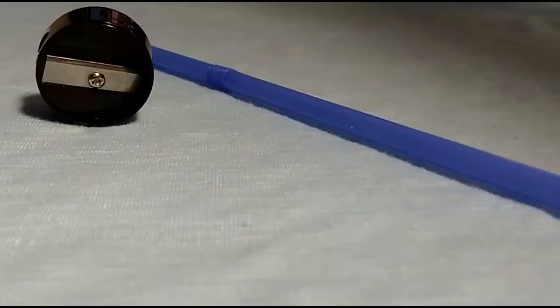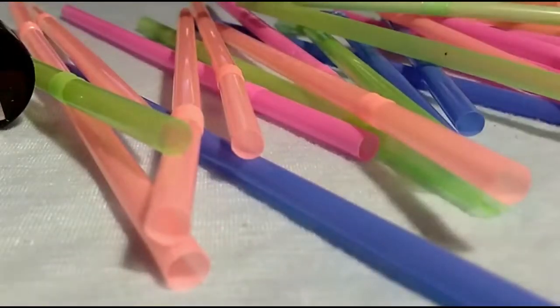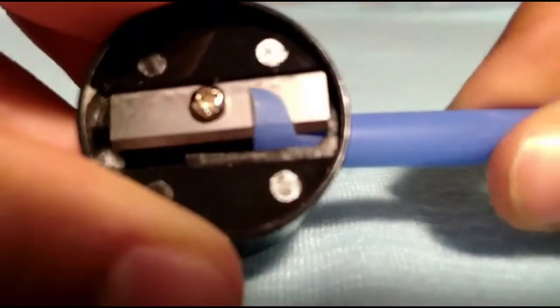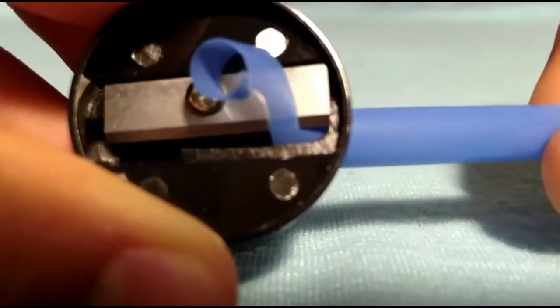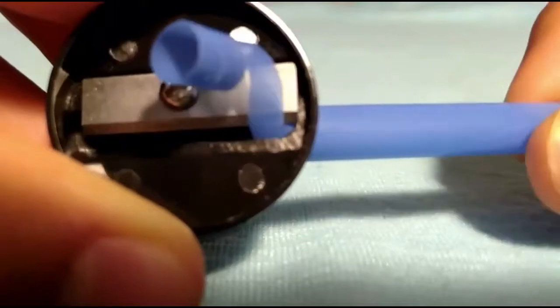Okay, that is much better. So basically you just want to put the straw in the pencil sharpener and just act like you're sharpening a pencil. It'll start to create this really cool slinky effect.